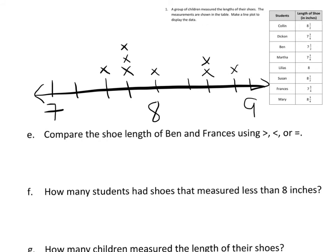So looking at E on your work today, compare the shoe length of Ben versus Francis with the comparison sign. So let's find Ben and Francis. So Ben would be seven and a half. Francis would be seven and three-fourths. And you can even see on your number line or your line plot, that seven and a half would be here. And Francis' seven and three-fourths would be here. So Francis is closer to the eight. He is farther. So his shoe size is larger.